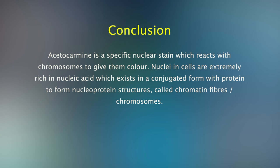This acetylcarmin is a specific nuclear stain which reacts with chromosomes to give them colour. Nuclei in cells are extremely rich in nucleic acid which exists in a conjugated form with protein to form nucleoprotein structures called chromatin fibres or chromosomes.